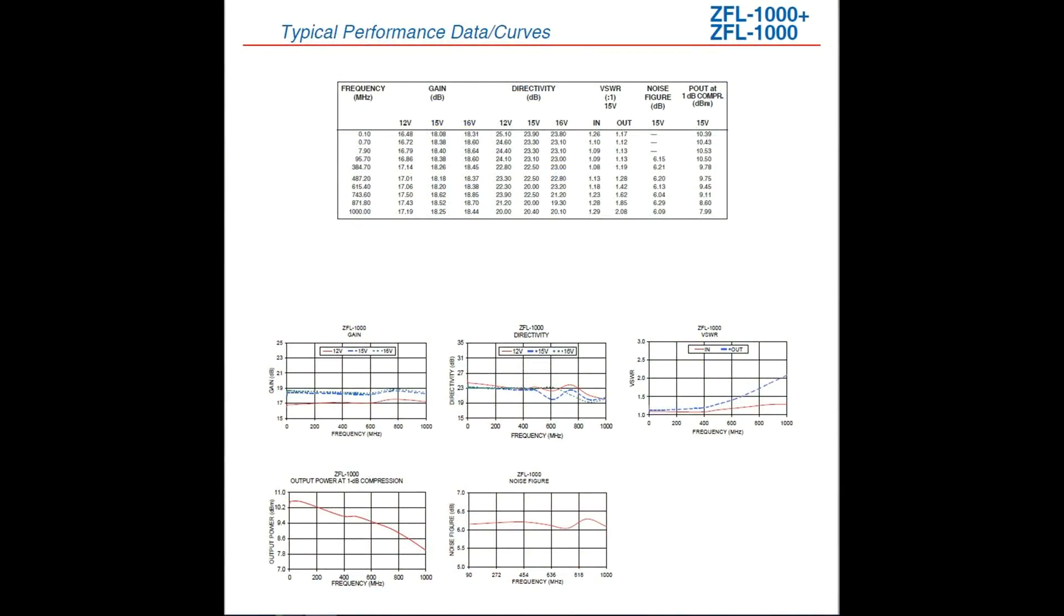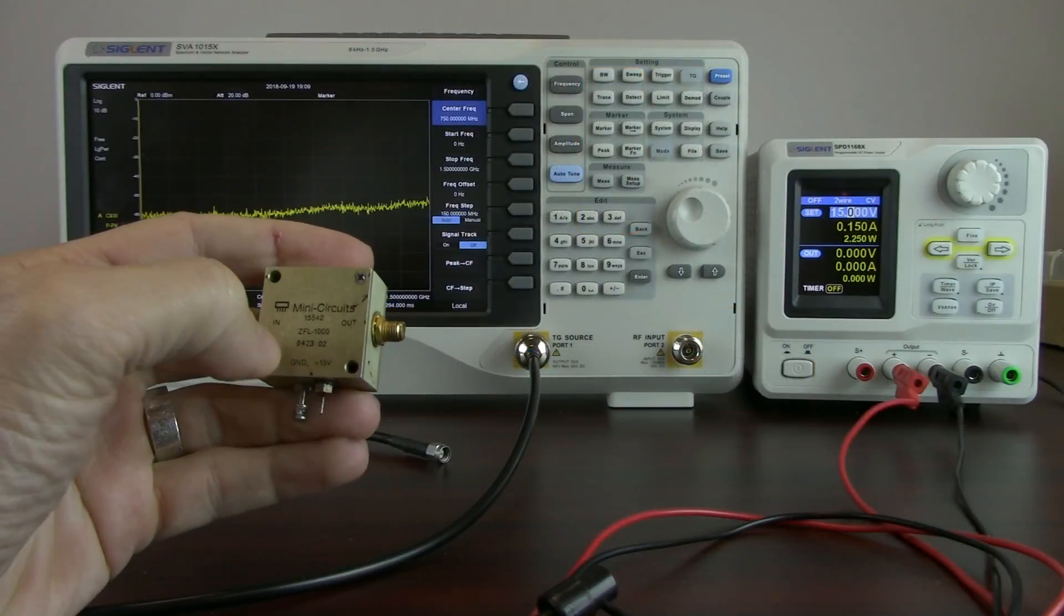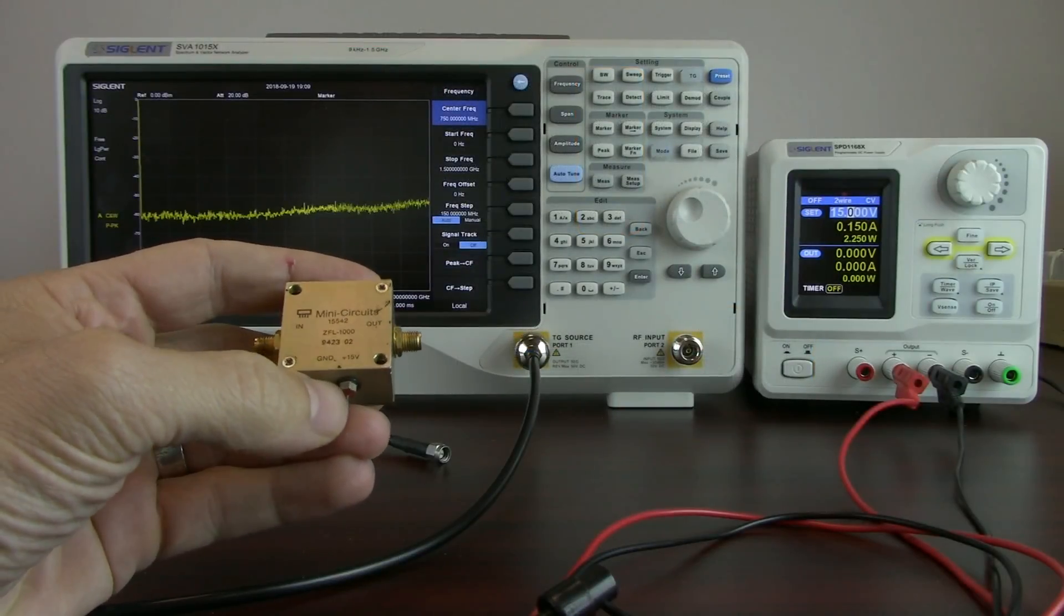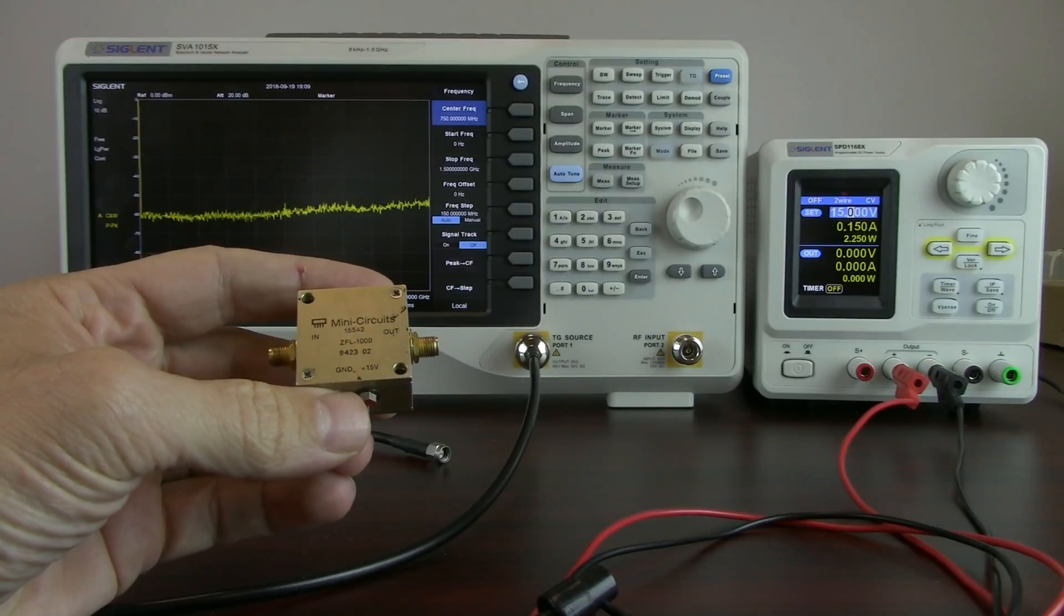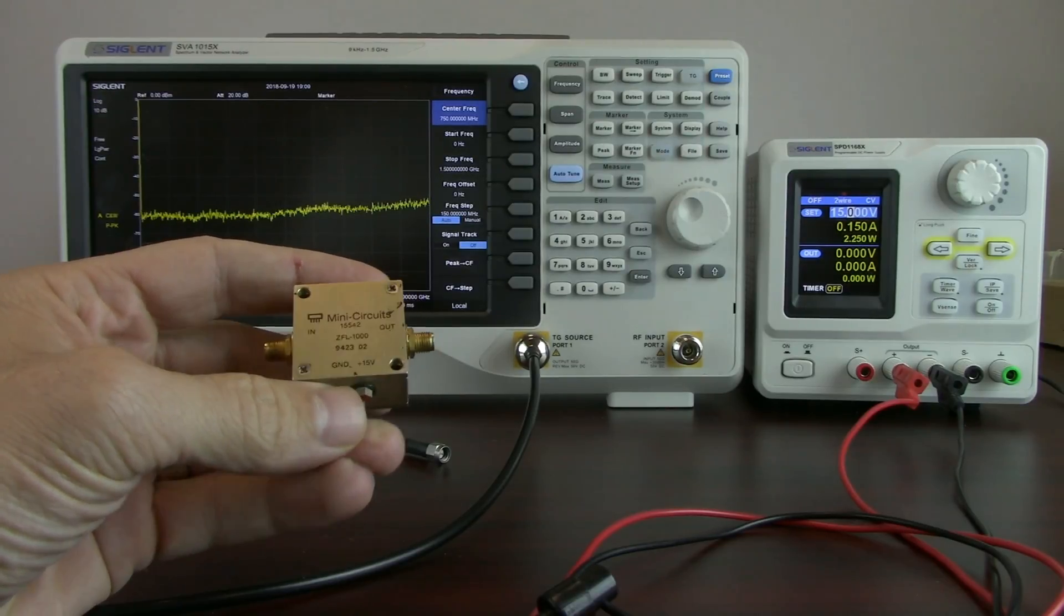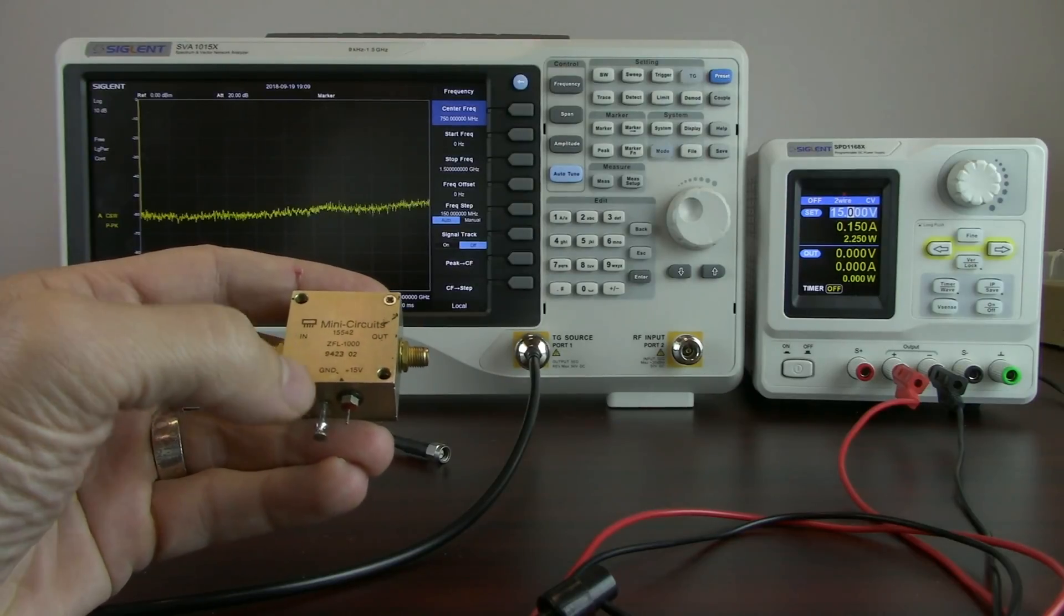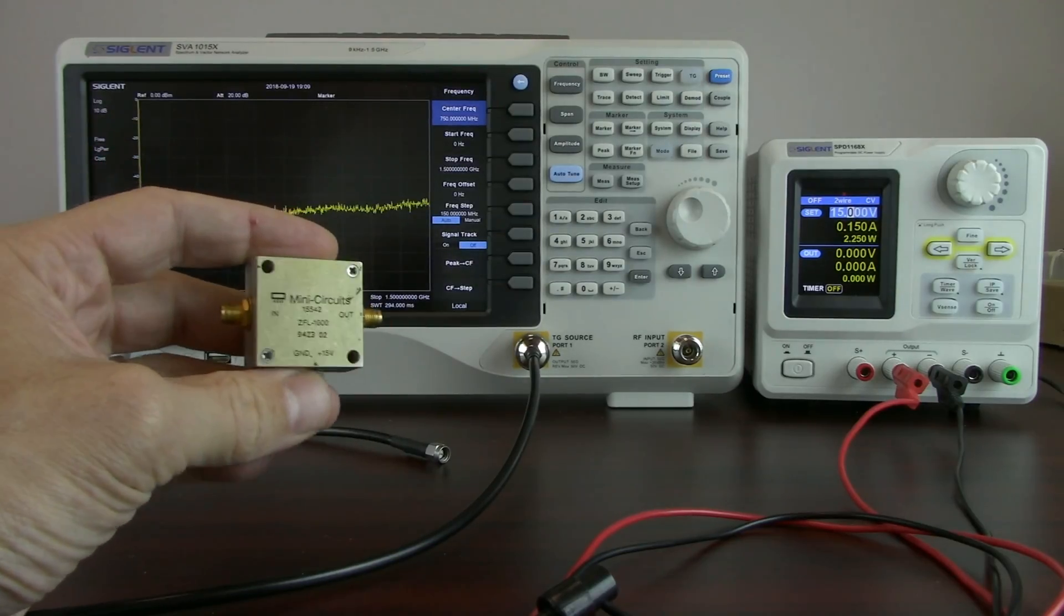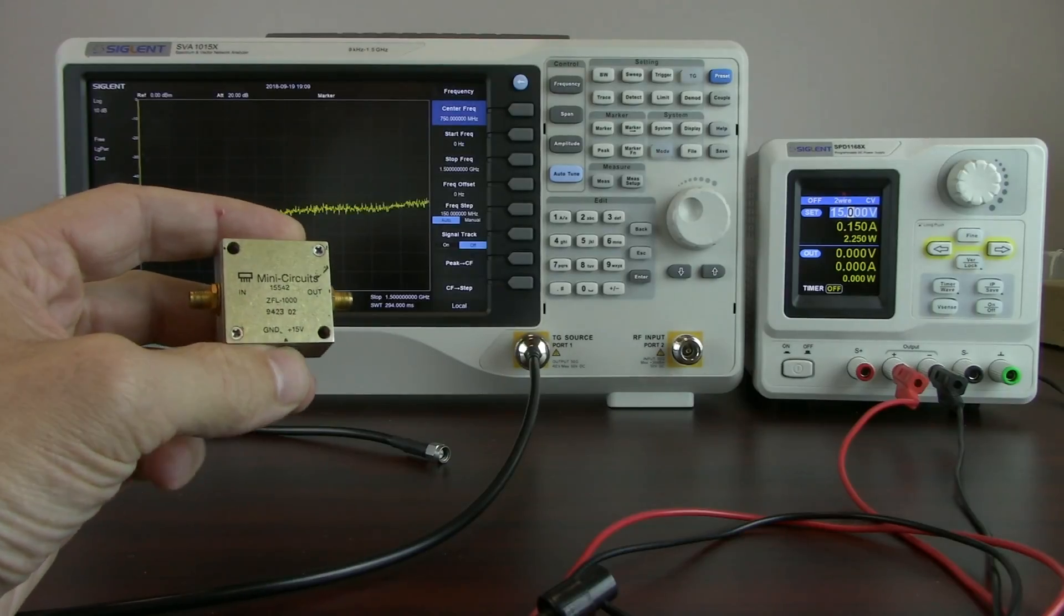And here is the data sheet for this particular amplifier. This is a MiniCircuits ZFL-1000. As you can see it has a clear indication of both the input and the output port VSWR measurement. For those of you that are new to these types of measurements, VSWR is a way to measure or calculate the impedance match between a particular circuit element and the circuit of interest. Most of the time this is going to be 50 ohms or very near 50 ohms.